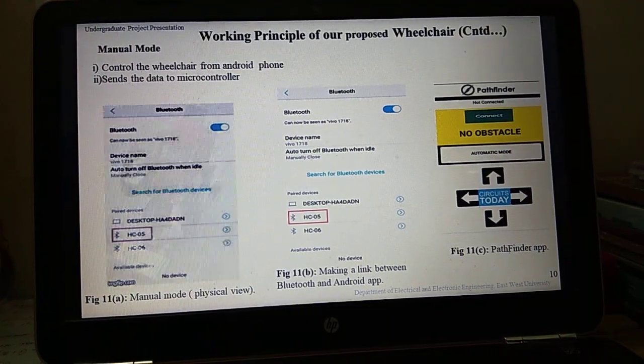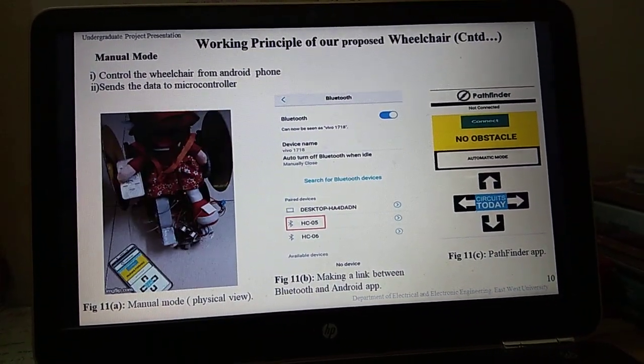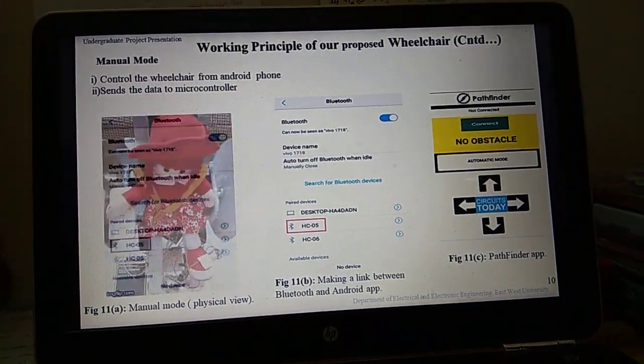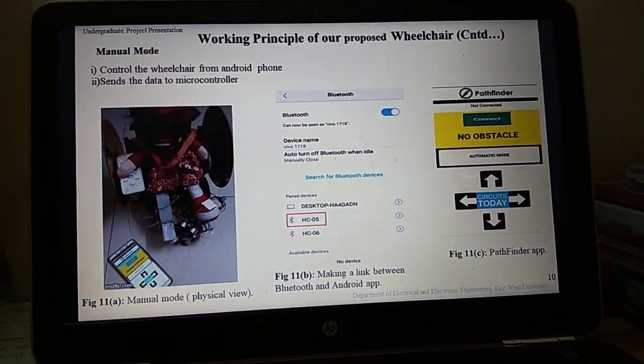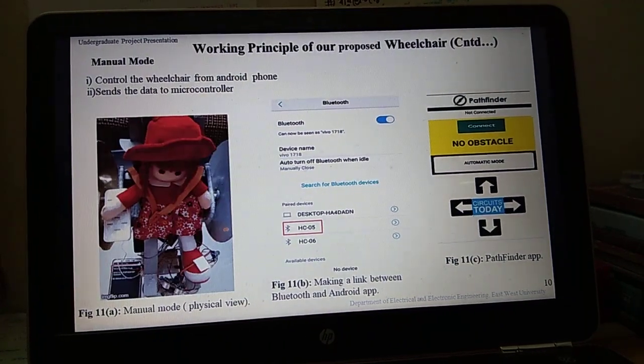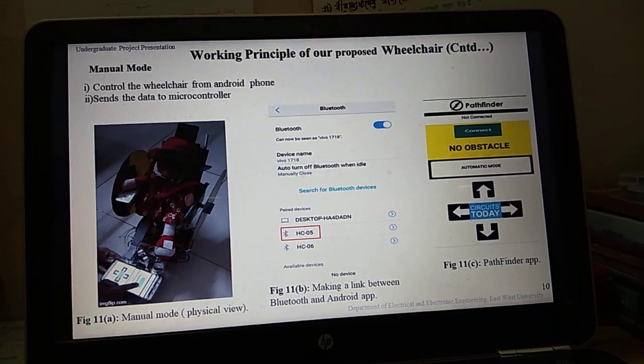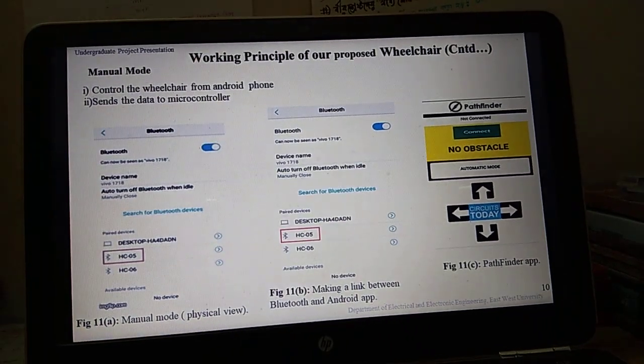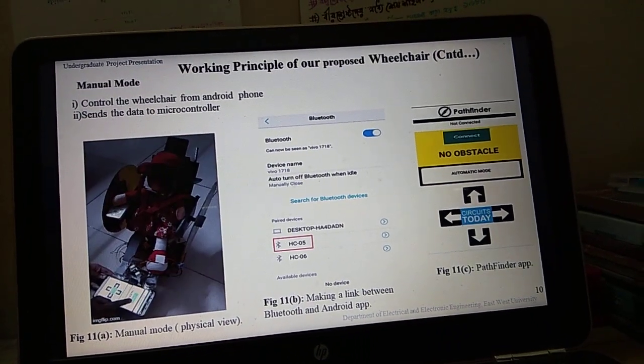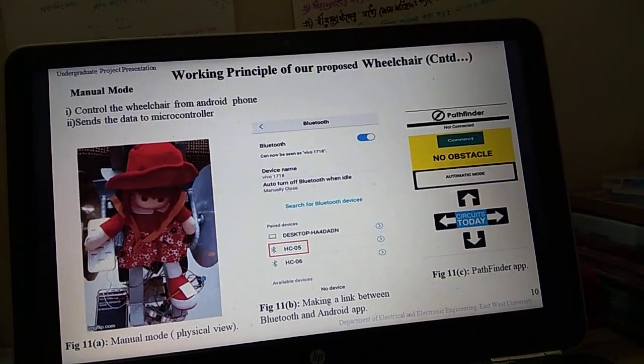After activating the Bluetooth, the smartphone will find the HC-05 Bluetooth module, then it needs to pair the device. After pairing the device, it needs an application for controlling the Arduino Uno. In this project I've used Pathfinder app which is available online. The app is for controlling the wheelchair. The smartphone is the transmitter of the wheelchair. It sends the data to microcontroller through Bluetooth module. It also helps to send instructions of forward, backward, left, and right to the microcontroller. Actually the smartphone is used as a remote of this system.